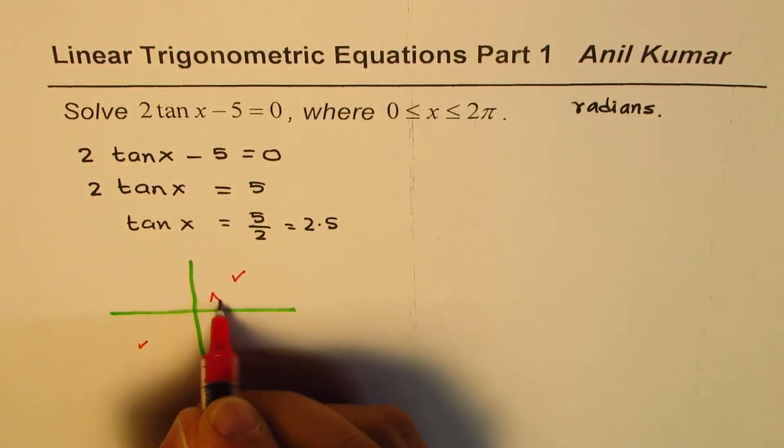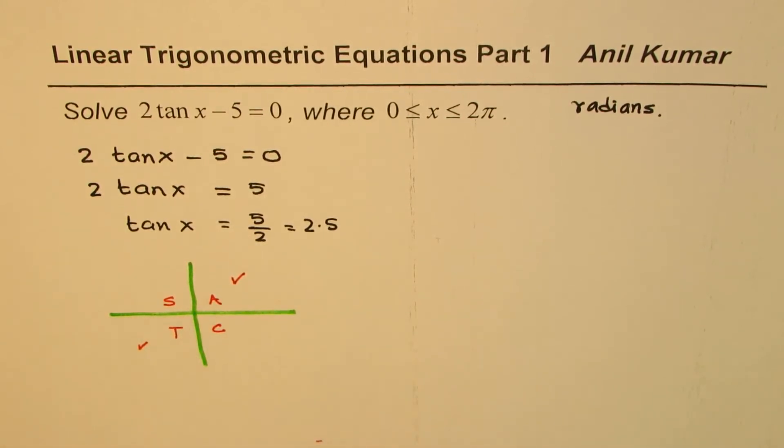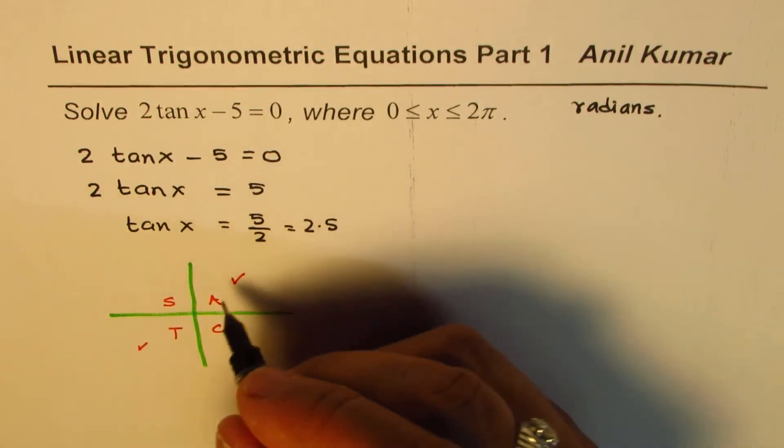You can know this from the CAST rule. So tan is positive in these two coordinates, so you're expecting two solutions to this.